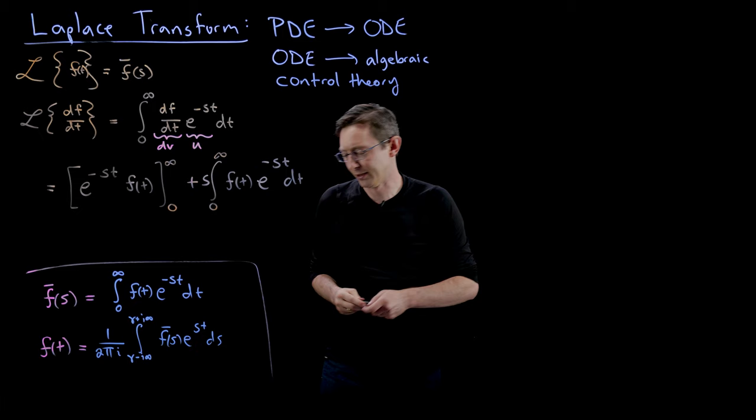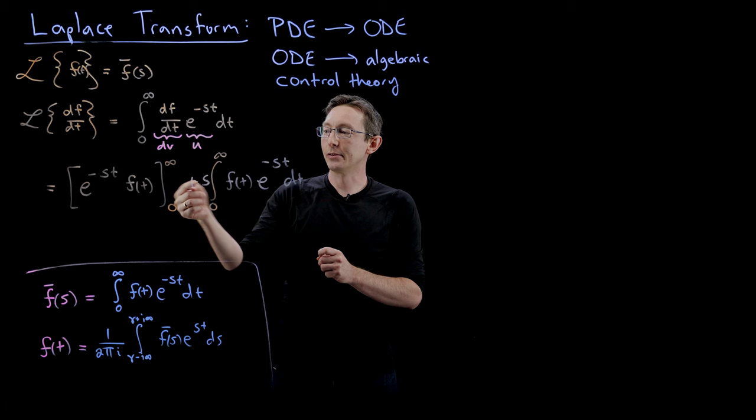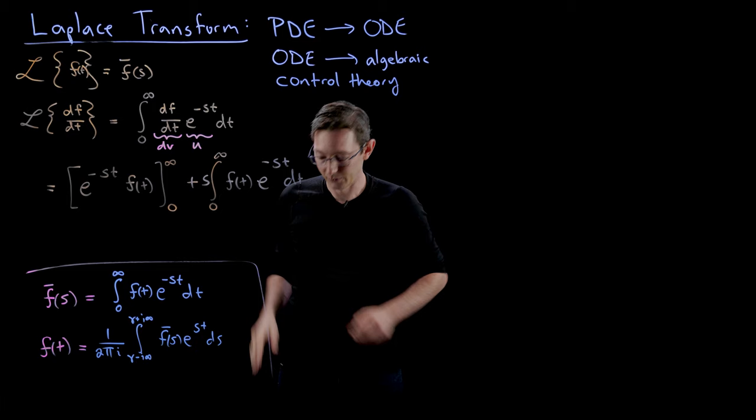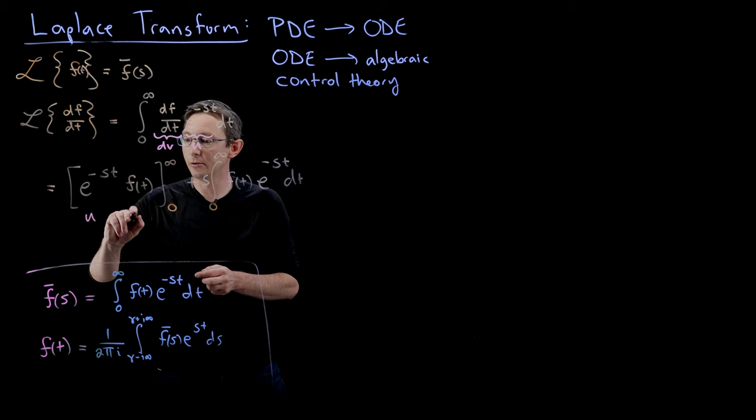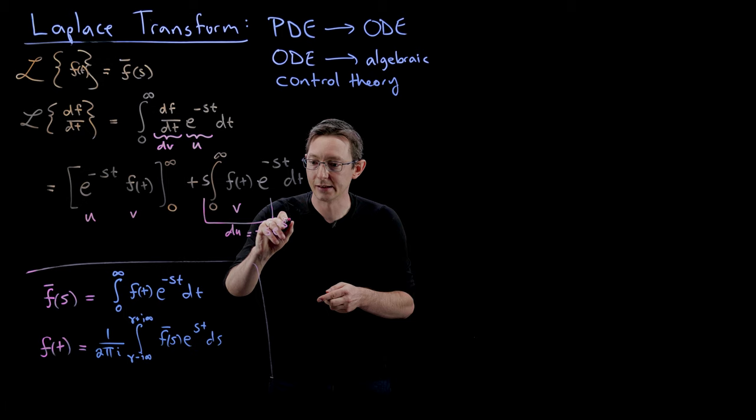Let me slow down and remind you: the derivative of e to the minus ST with respect to time is minus S e to the minus ST, so that minus integral becomes a plus S integral. To be clear about the labels: e to the minus ST is U, F is V, F is also V in the second term, and DU equals minus S e to the minus ST.